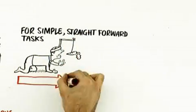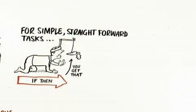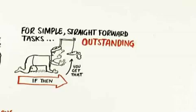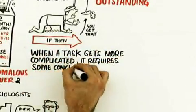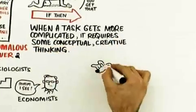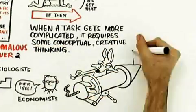This has been replicated over and over and over again by psychologists, by sociologists, and by economists. For simple straightforward tasks, those kinds of incentives - if you do this then you get that - they're great for tasks that are algorithmic, a set of rules where you have to just follow along and get a right answer. If-then rewards, carrots and sticks, outstanding.